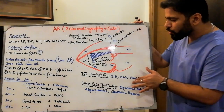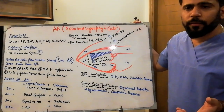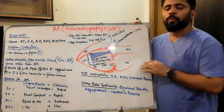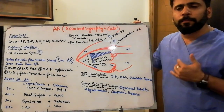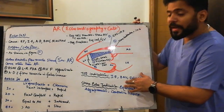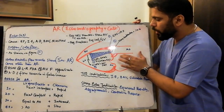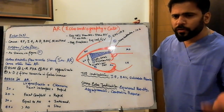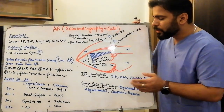Moving to transesophageal echocardiography (TOE/TEE): space-occupying lesions, abscesses, and findings of infective endocarditis are more visible on TEE because the aorta is a posterior structure closer to the esophagus. TEE helps diagnose aortic root abscesses, and is also useful for bicuspid aortic valve and sub-valvular membranes that are not well appreciated on transthoracic echocardiography.